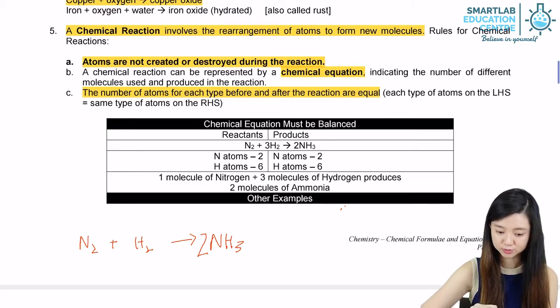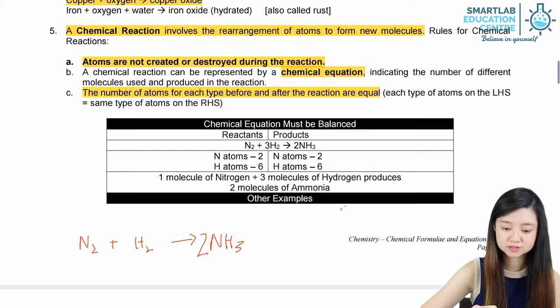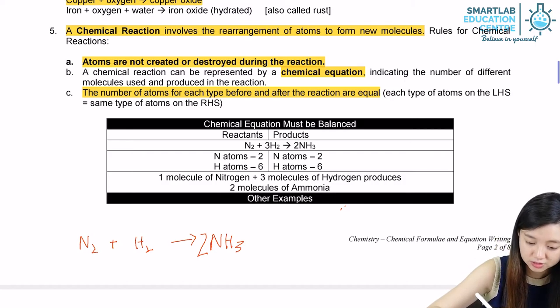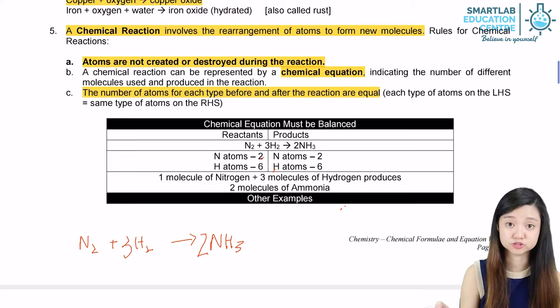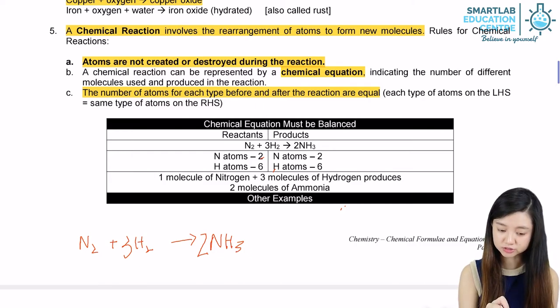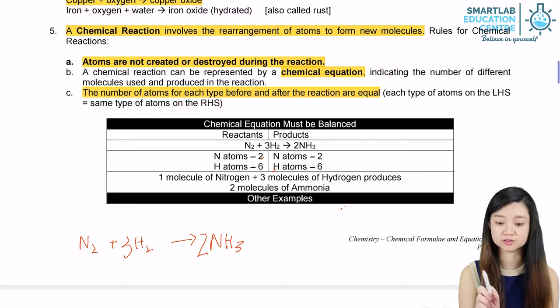But as we write the number 2, you realize that there's now six hydrogen atoms on the right side, but the left side only have two hydrogen atoms. So what we can do is we should write in the number 3 in front of hydrogen so that you can balance out the number of hydrogen: 6 hydrogen on the left and 6 hydrogen on the right now.